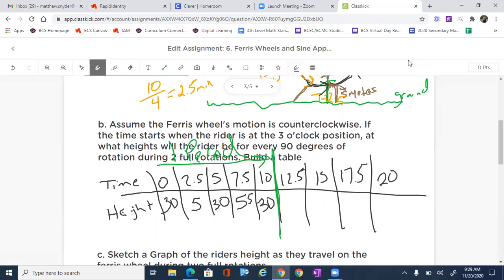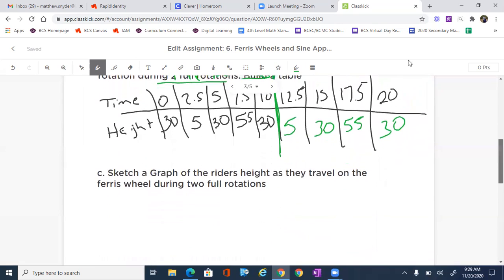And then we just follow the same pattern at 12.5. We're back down at five, then 30, then 55. And then we're back at 30 again. So there's our second revolution.